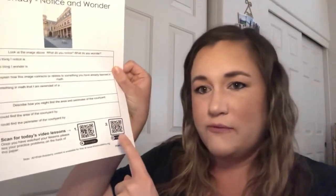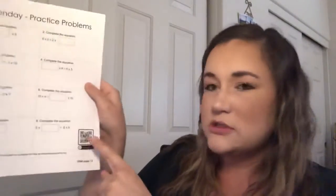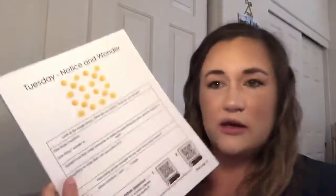Really quickly: Monday is the commutative property — that's what we're using, and that's around multiplication — notice and wonder, video lessons using the code or the link in Google Classroom, practice problems, and answer key using the code. Tuesday, we're working on distributive property while we multiply — notice and wonder, video lessons, and practice problems with our answer key. Wednesday is working with the associative property to multiply — your notice and wonder, your practice problems, and those things in Google Classroom.